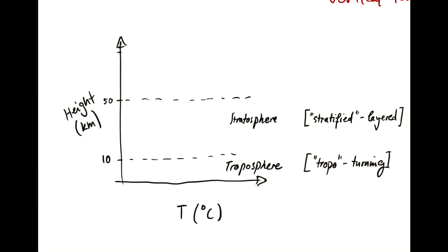And then up to around 90 kilometers, we have the mesosphere, meso meaning middle. That's a little confusing because this is not actually the middle atmosphere.